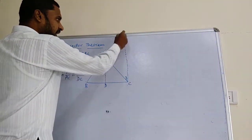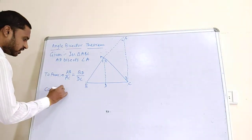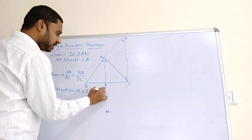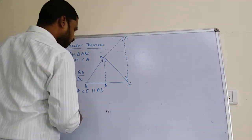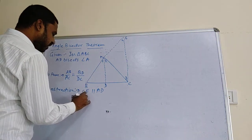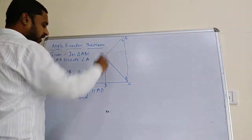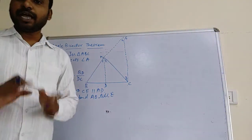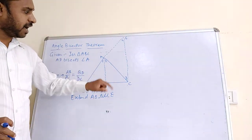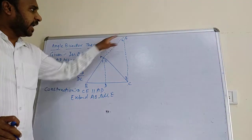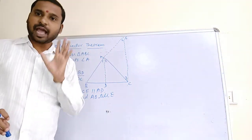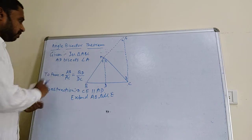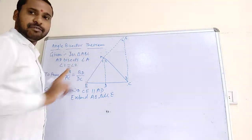In the construction, from C, draw CE parallel to AD, and extend AB till E. Now I have named two angles: Angle ACE as Angle 3, and Angle AEC as Angle 4. Here Angle 1 and Angle 2 are already present. Angle 1 is equal to Angle 2 — this is your given condition.